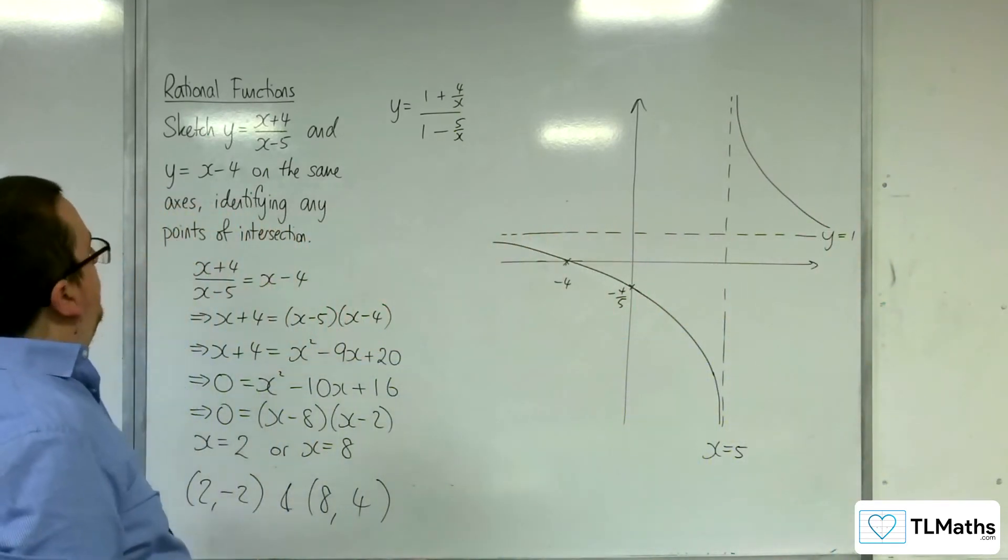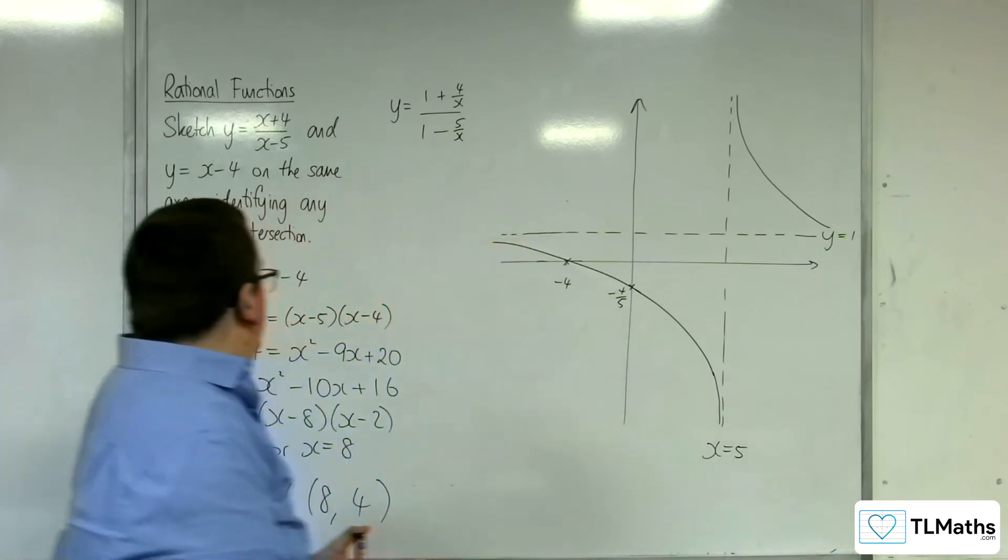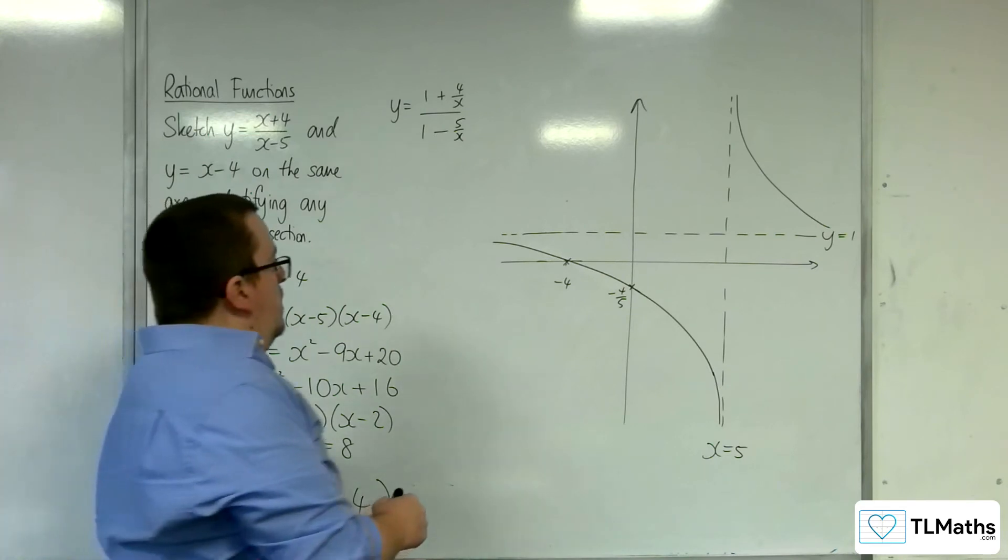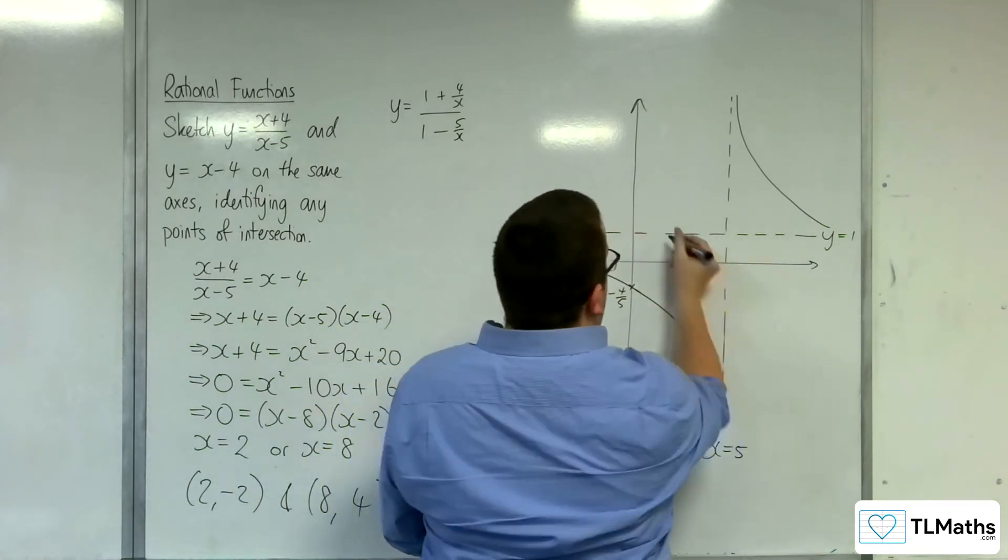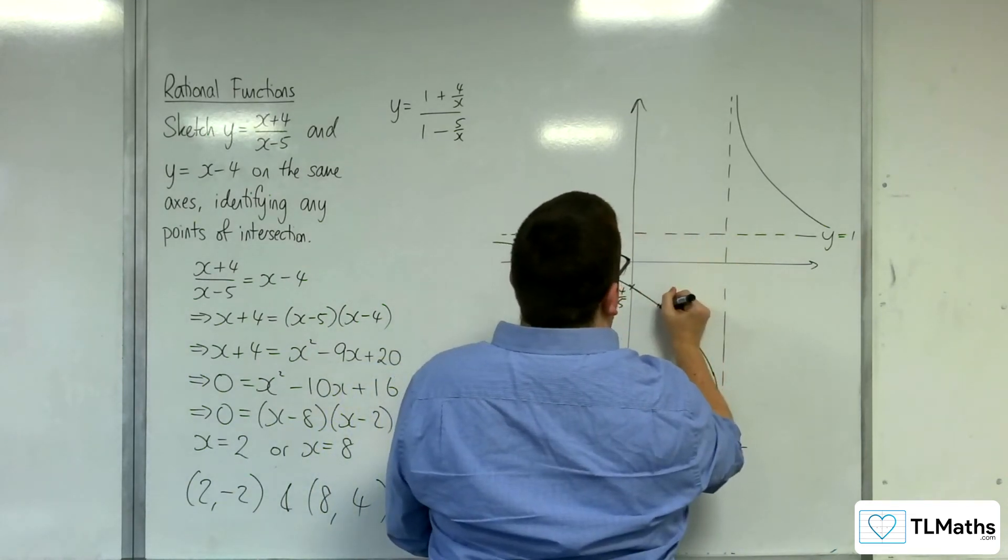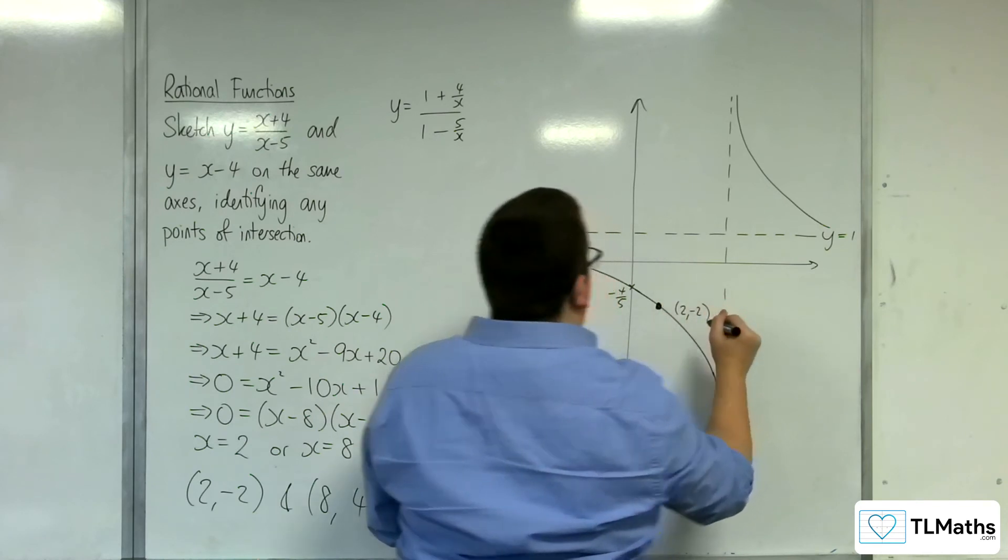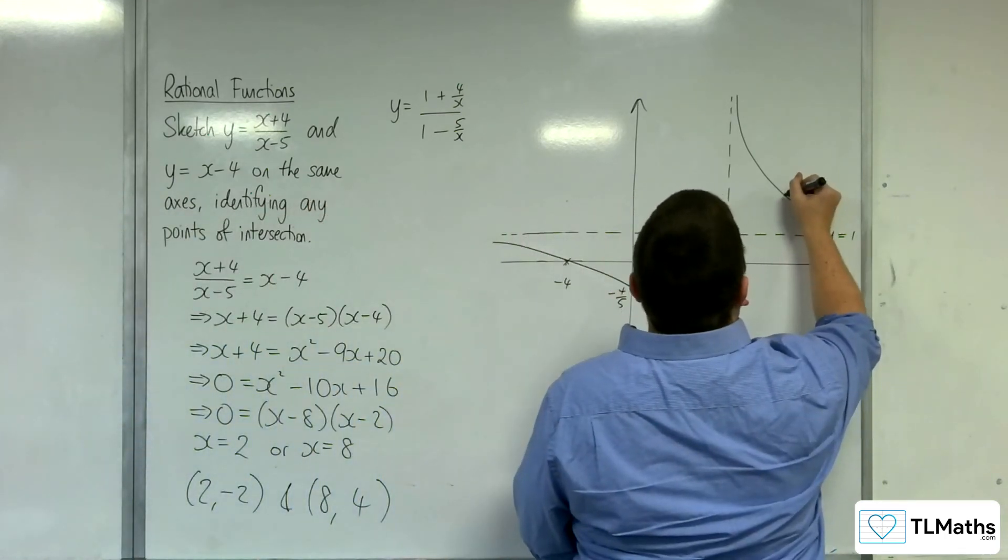And the rest of the curve is going to be up here. Right, so then we've got y equals x take away 4. And that's going to be intersecting at 2 minus 2 and 8, 4. So 2 minus 2, we're going to have something like somewhere down here. And 8, 4. Something like this.